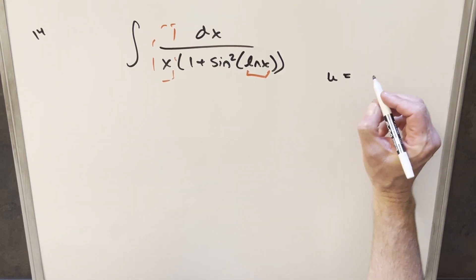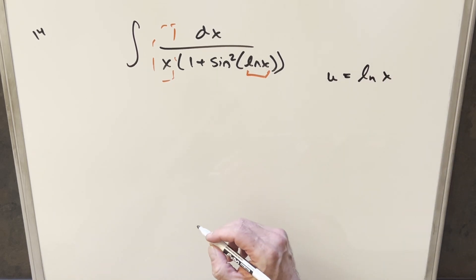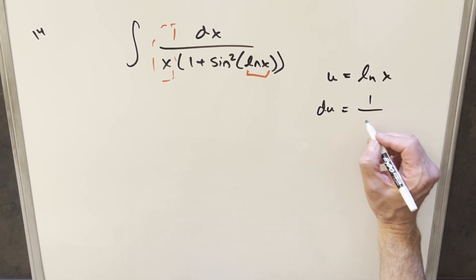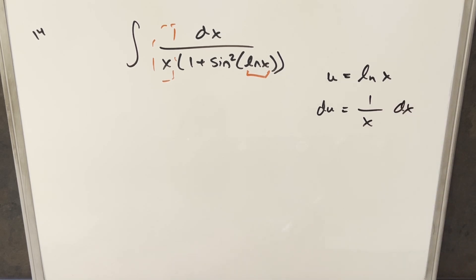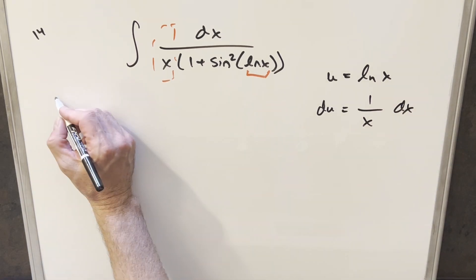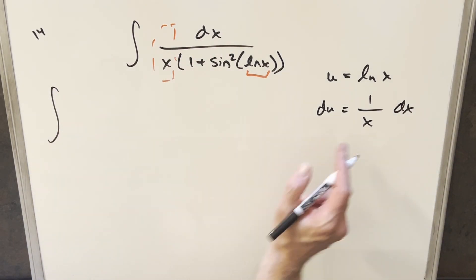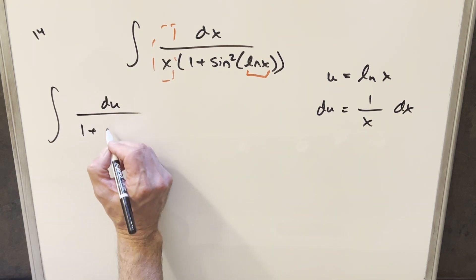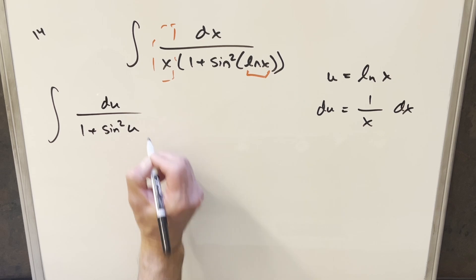I'm going to say u is going to be equal to lnx. And then I'll take the derivative, so du is going to be 1 over x dx. And so I'll go ahead and substitute, with all this stuff over here being our du. So I'll write it as du in the numerator, and then it's going to become 1 plus sine squared of u.